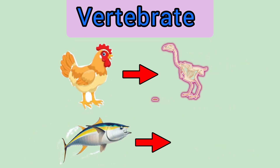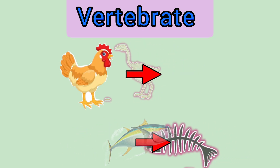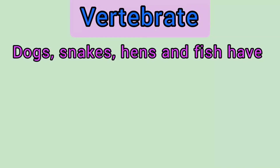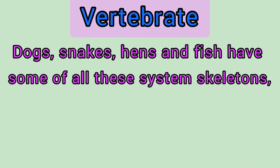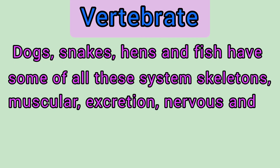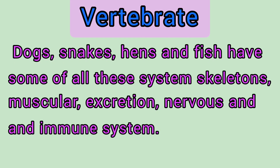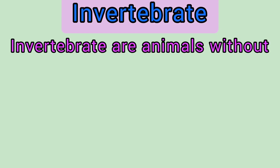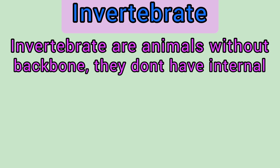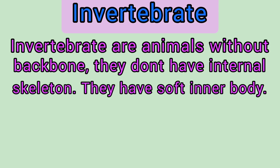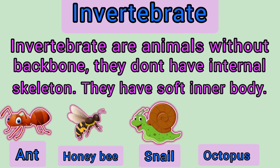Dogs, snakes, humans, and fish all have these systems: skeletal, muscular, excretion, nervous, and immune systems. Invertebrates are animals without a backbone. They don't have an internal skeleton and they have a soft inner body, like a honeybee.